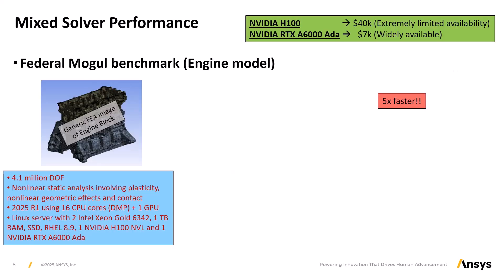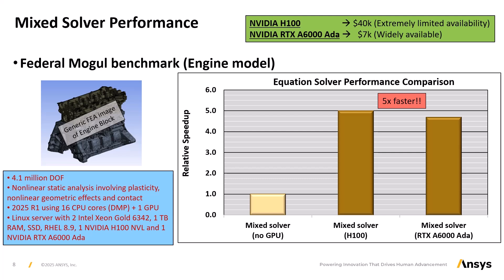Here is an engine block benchmark that shows the performance advantages of using the mixed solver with various GPU cards. The benchmark is a non-linear static analysis of about 4 million degrees of freedom using the latest release 2025 R1 software with GPUs, and its baseline is running the mixed solver without a GPU. The first GPU used is the NVIDIA H100, a data center card, which leads to a 5x improvement in performance relative to the baseline. The second GPU is an NVIDIA RTX A6000 ADA, a workstation class card. Running the mixed solver on this GPU is also extremely effective because the solver uses the card's lower precision and high compute speeds, obtaining nearly the same performance level as the more expensive data center card.